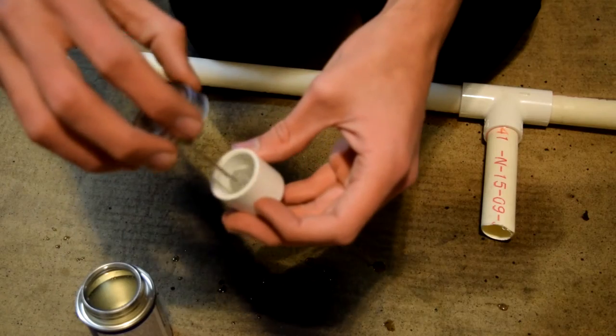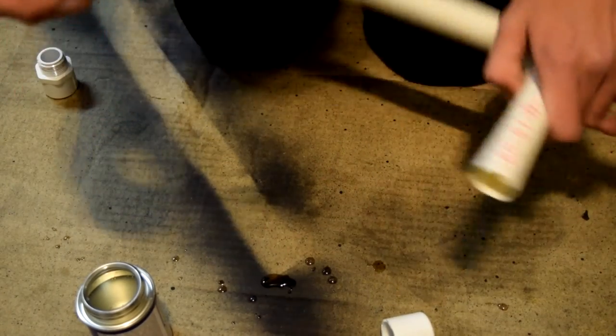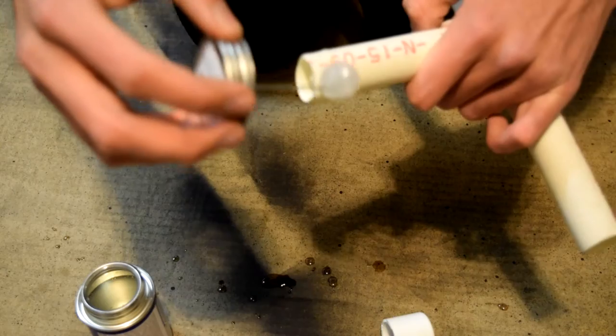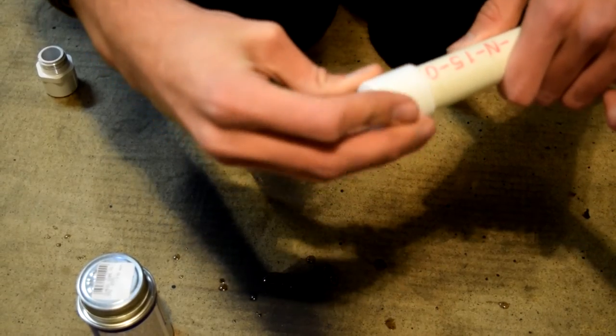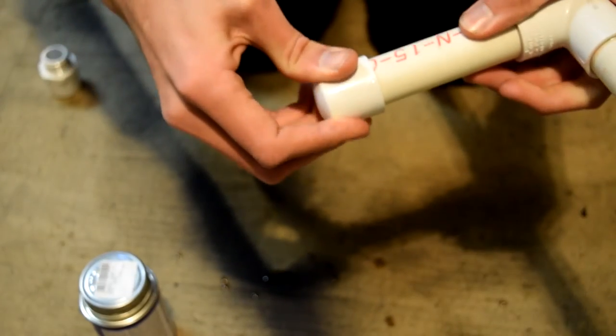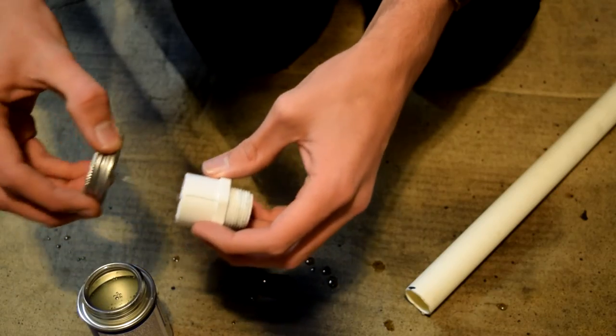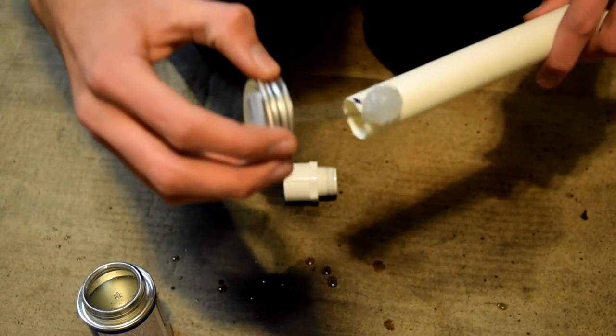Glue a cap onto the 5 inch piece sticking out the front. Glue the adapter to the end of the 10 inch piece on the smooth end.